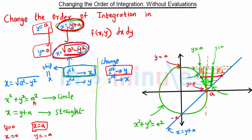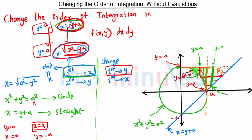In region R1, we consider one strip parallel to the y-axis. The lower end of the strip is on the circle, so y will be equal to √(a² - x²), and the upper end is on the line y equal to a.